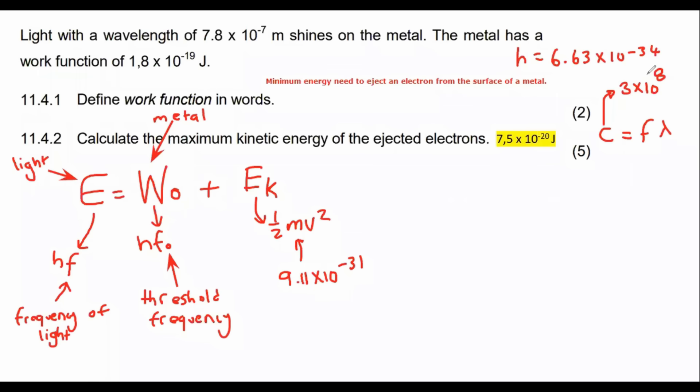Question 11.4.2 says calculate the kinetic energy of the ejected electrons. Let's see what we have here. They give us the wavelength, that's the light that they are talking about, so we'll definitely have to use this formula to get the frequency. And then it says that the metal has a work function of 1.8 times 10 to the minus 19, so they've already given us the work function. That means we do not have to use this formula, we don't have to use that because they've already given us the work function.